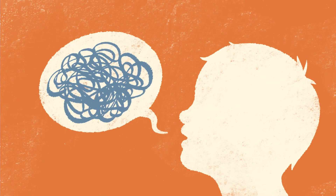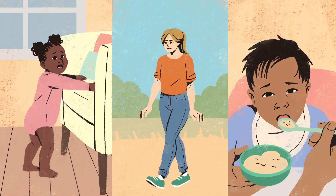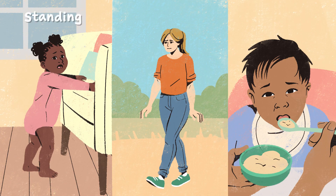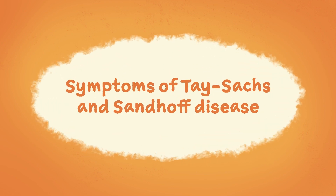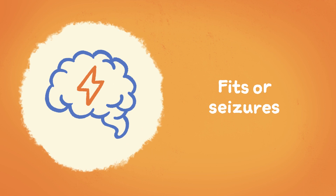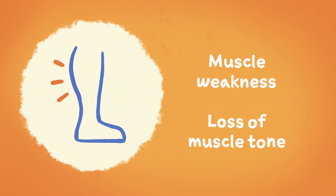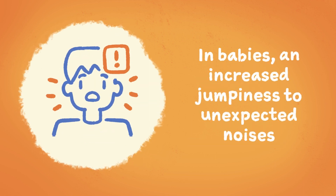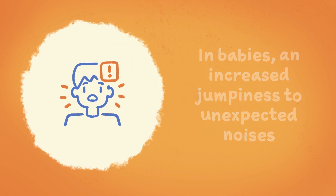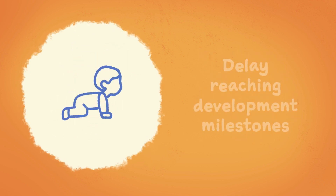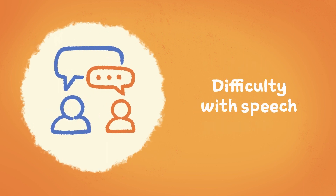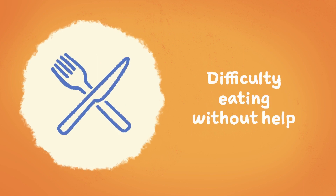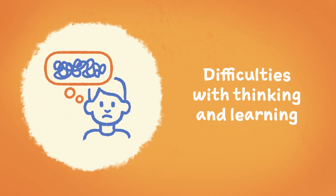This leads to problems with thinking and speaking, and also causes problems with movement of the body, such as standing, walking, and eating. Common symptoms of Tay-Sachs and Sandhoff disease may include fits or seizures, muscle weakness and loss of muscle tone particularly affecting the chest and stomach area, increased jumpiness to unexpected noises, reduced coordination, delay reaching developmental milestones such as sitting or walking, difficulty with speech, inability to eat unassisted, and difficulties with thinking and learning.